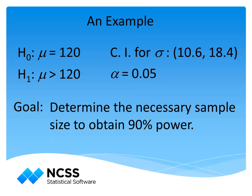We now turn to an example to illustrate many of these points. To avoid muddling these concepts with the details of an advanced statistical test, we will look at one of the most basic statistical tests: testing a single mean based on a one-sample t-test. Suppose a researcher would like to determine whether a population of individuals has a mean systolic blood pressure greater than 120, which is a commonly used cutoff between normal blood pressure and prehypertension. A small preliminary sample provides a confidence interval estimate of the standard deviation to be 10.6 to 18.4. An alpha value of 0.05 is used, and the primary goal is to determine the sample size needed to obtain 90% power.